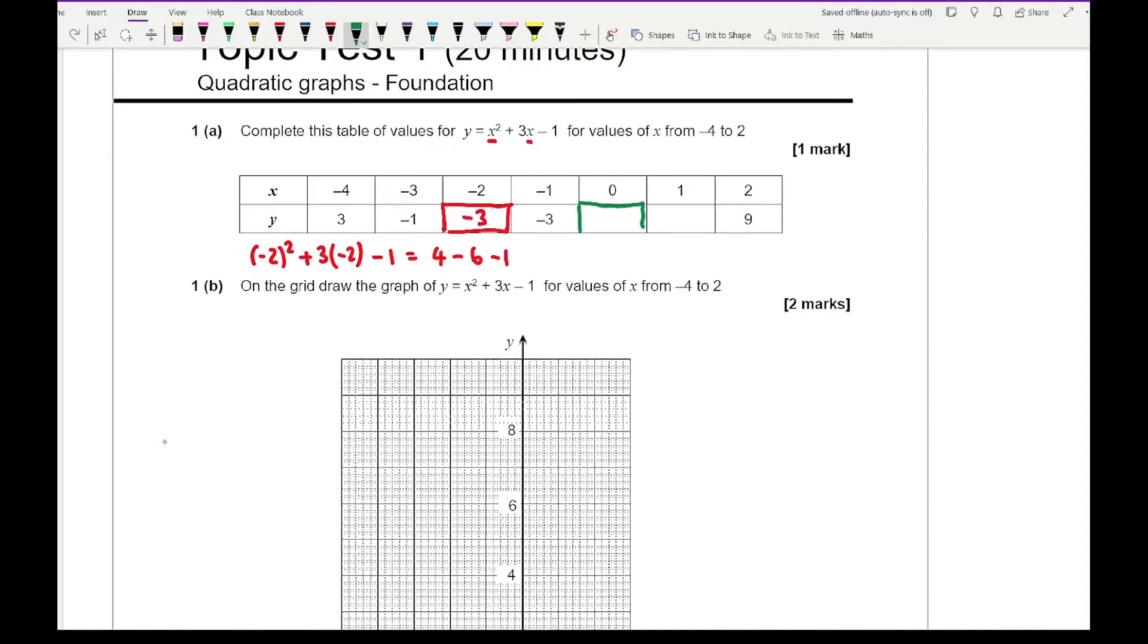Moving on to our next one with 0. This one should be relatively easy. We're substituting so it's going to be 0 squared plus 3 times 0 minus 1. 0 squared is 0, 3 times 0 is 0, so the only thing I've got is minus 1. And then finally for the next one we end up with 1 squared plus 3 times 1 take away 1. So that's 1 plus 3 take away 1 which gives me a final answer of 3.